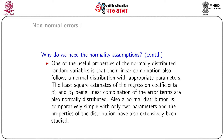One useful property of normally distributed random variables is that their linear combination also follows a normal distribution with appropriate parameters. The least square estimates of the regression coefficients, beta naught hat and beta 1 hat, being linear combinations of the error terms, are also normally distributed. Assuming a normal distribution for the errors makes the study of errors comparatively simple, and since the normal distribution is defined by only two parameters, it is easy to handle.